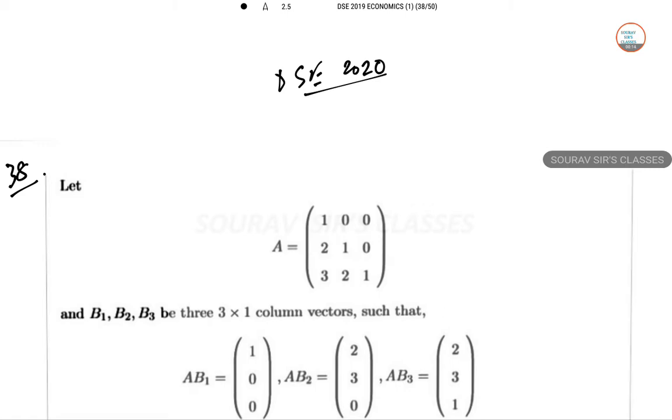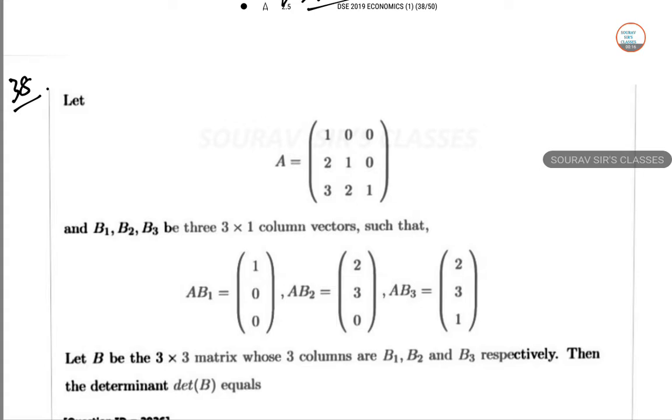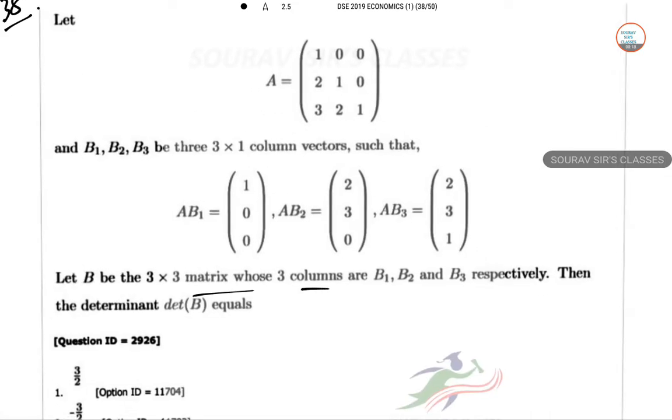B1, B2, B3 are the column vectors such that AB1, AB2, and AB3 are provided. B is a 3×3 matrix whose 3 columns are these respectively, then the determinant of B equals to what?